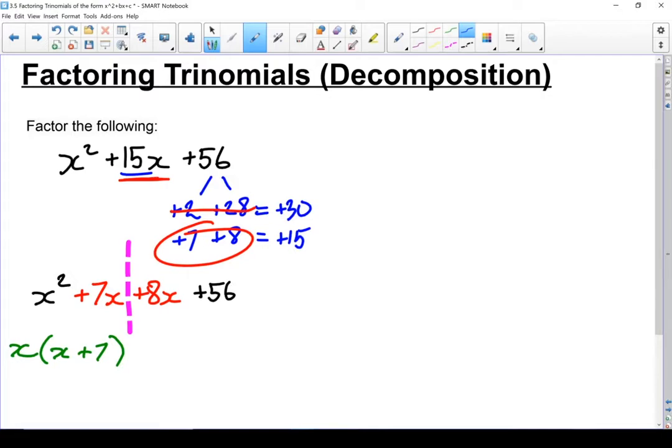On the right hand side, looking at this 8x and this plus 56, I can factor an 8 out of both of those. So I'm going to take a plus 8. Watch that sign. It's important. I'm taking 8 out and I'm left with an x and another 7. When I divide 56 by 8, I end up with 7.